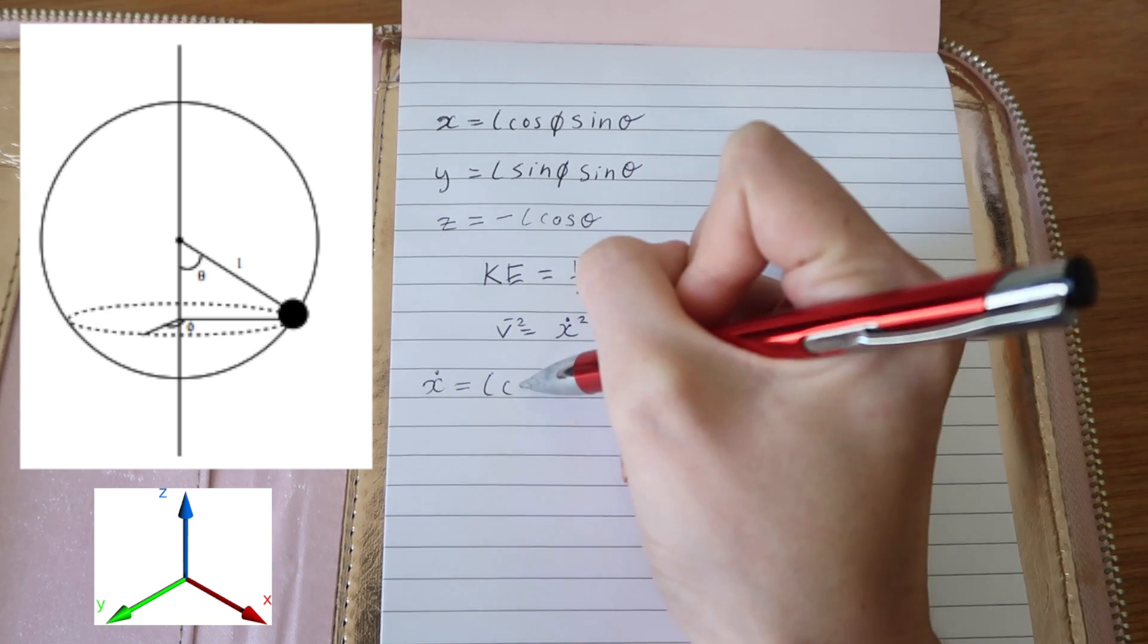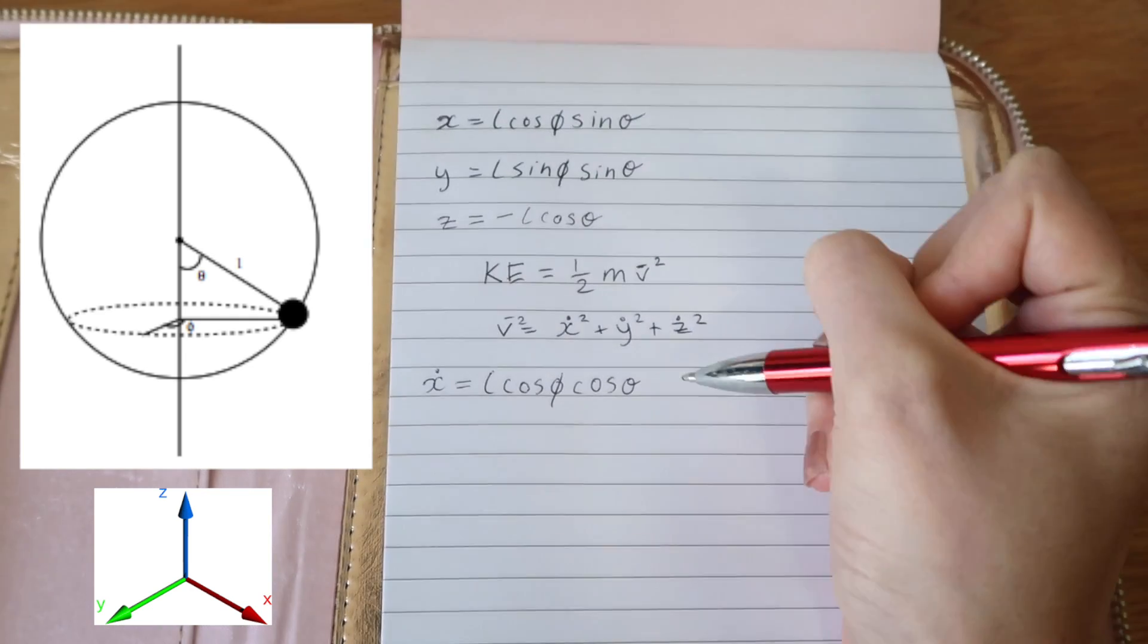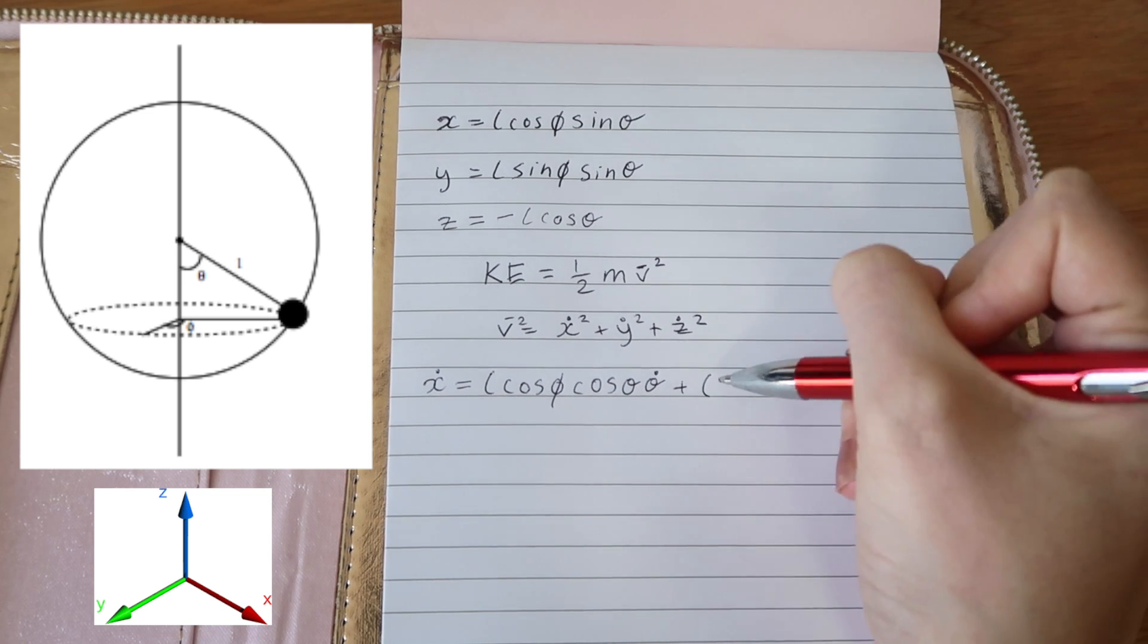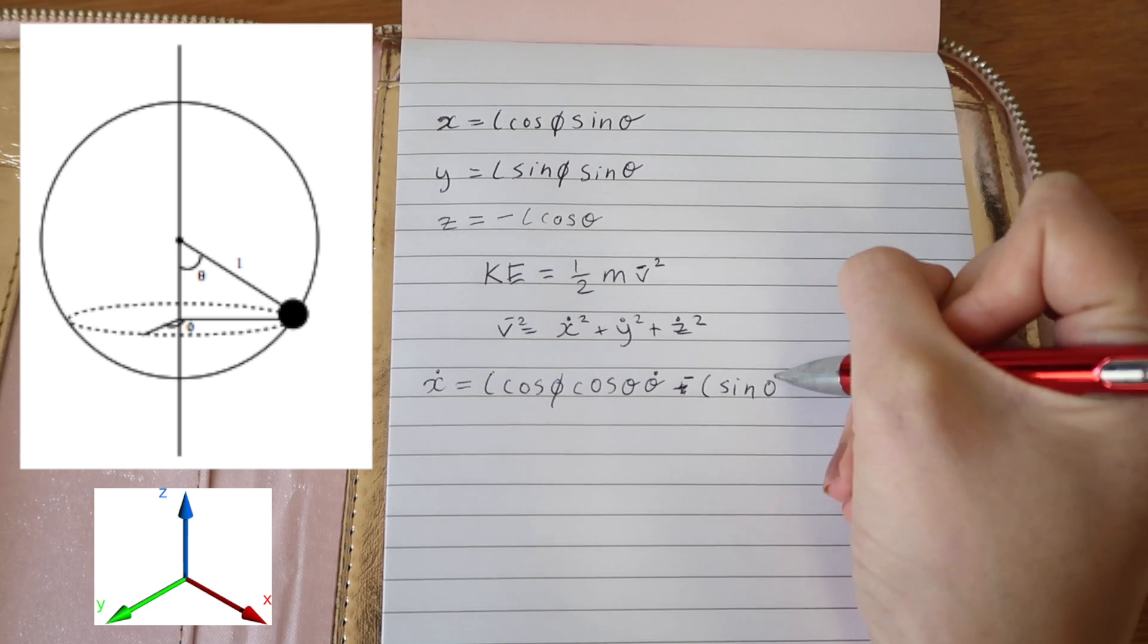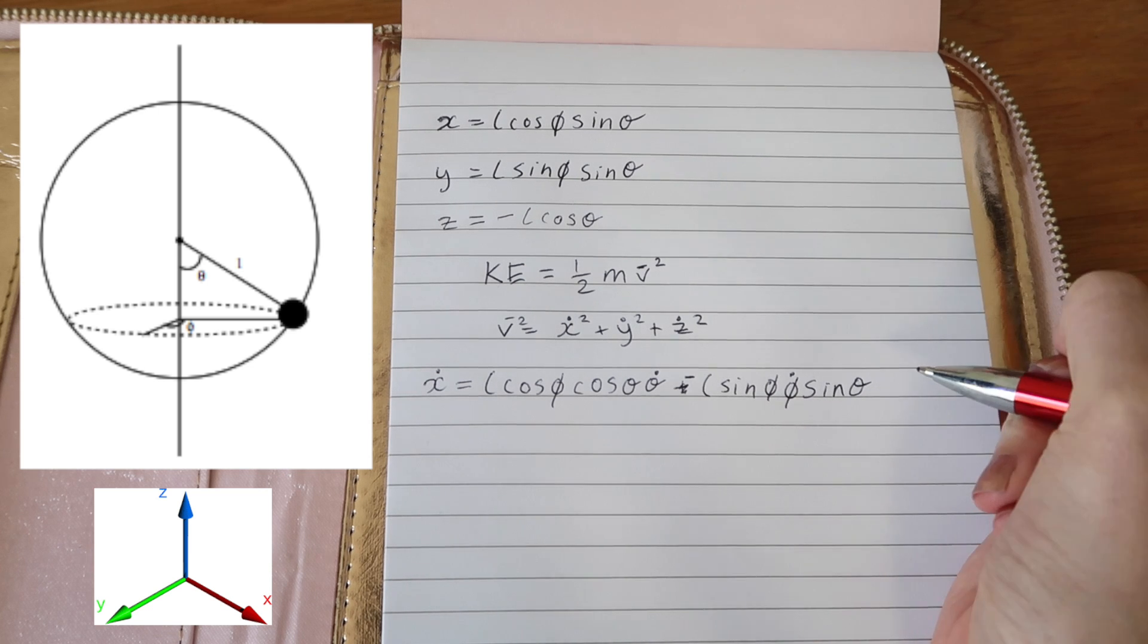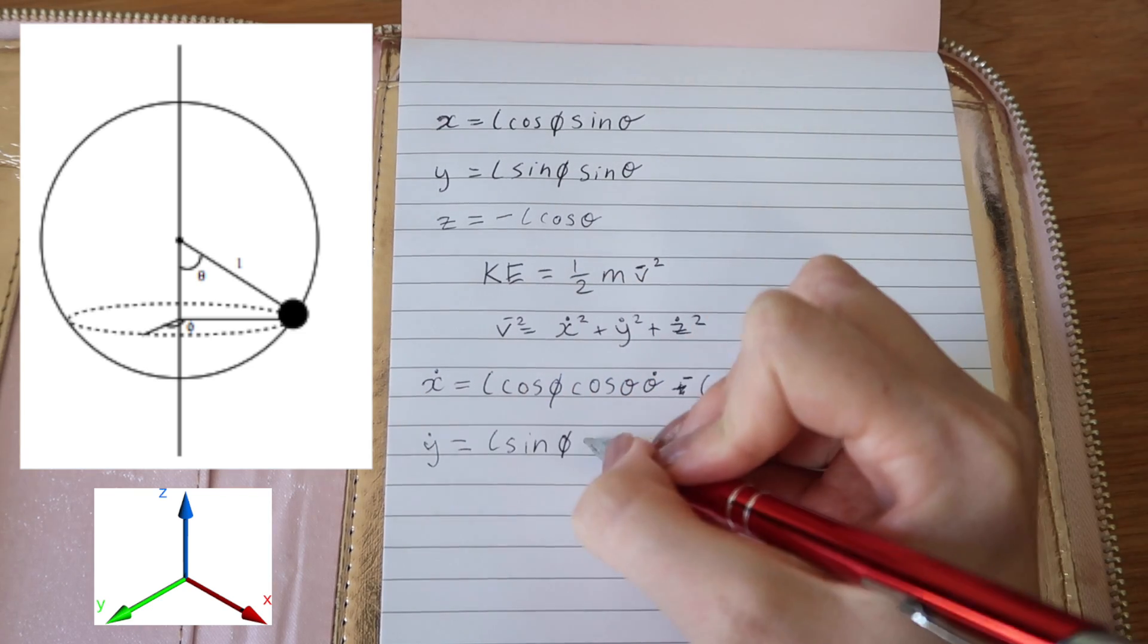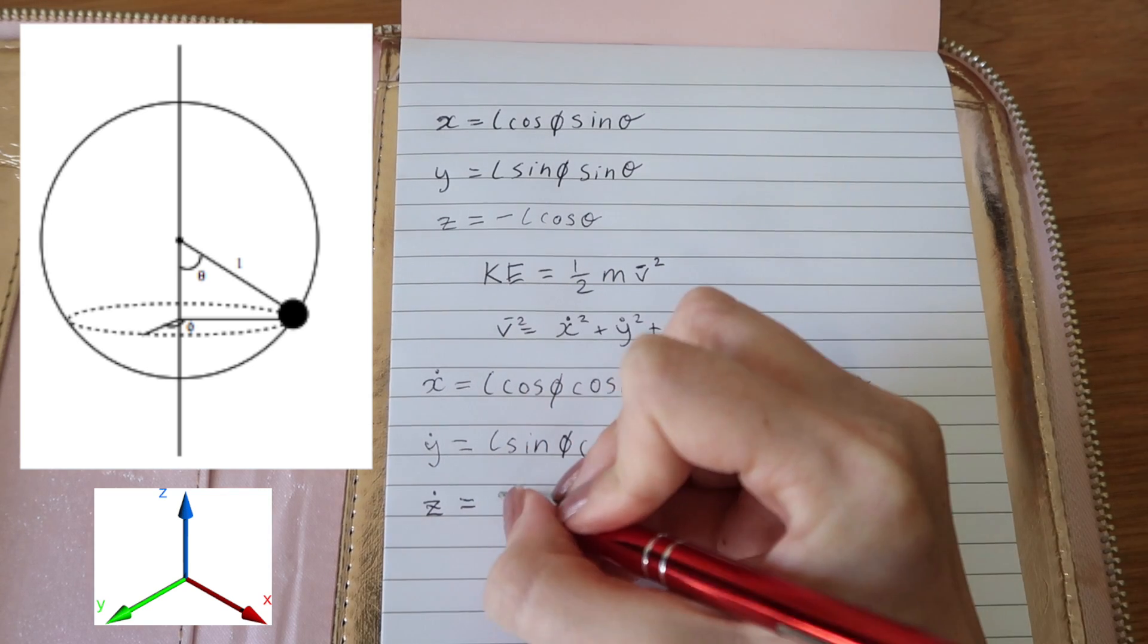To differentiate x with respect to time, we use a combination of the product rule and the chain rule since both phi and theta are variables that change with time. The product rule gives two terms and the chain rule gives theta dot and phi dot. z dot just requires the chain rule.